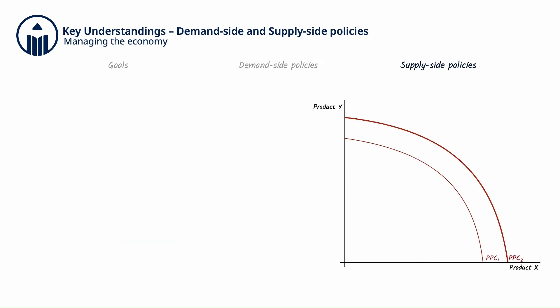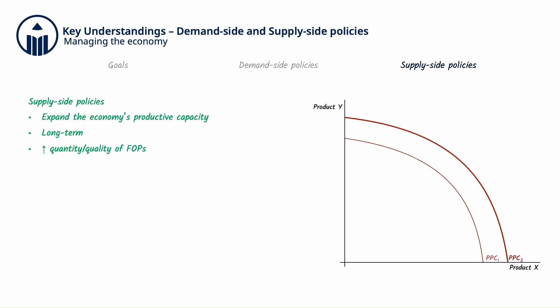Supply-side policies, on the other hand, aim to expand the economy's productive capacity in the long term by increasing the quantity and/or quality of the factors of production (FOPs), and thereby increasing the economy's potential output, shown as an outward shift of the production possibilities curve from PPC1 to PPC2. Supply-side policies can be market-based or interventionist.